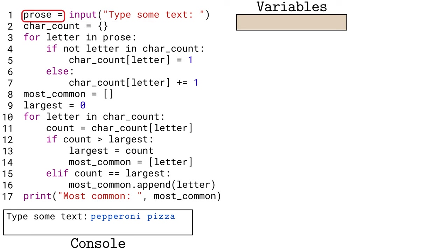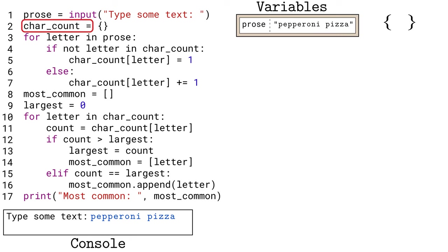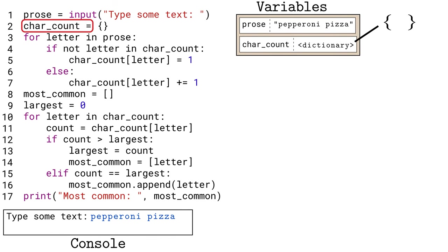This single equal sign tells Python to create a variable called 'prose' and save what the user typed to that variable. To collect all the characters and their associated count, we need to create an empty dictionary, as indicated by these curly braces, and save the dictionary to a variable called 'char_count'. The dictionary starts empty, but we will have Python add keys and values very soon.